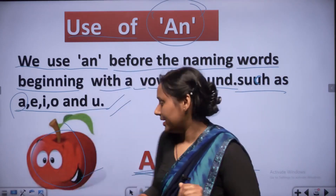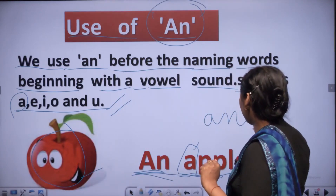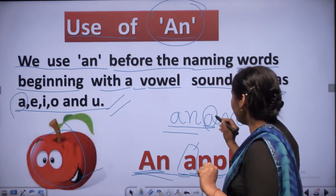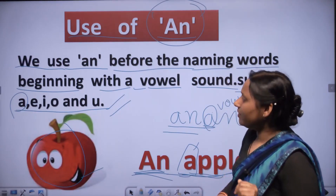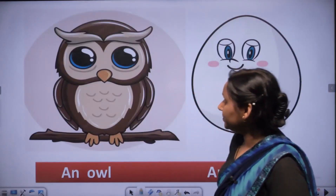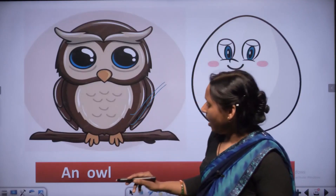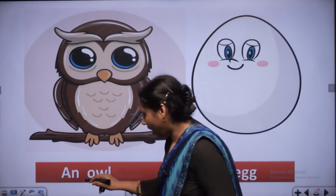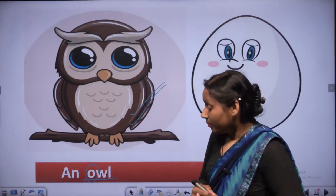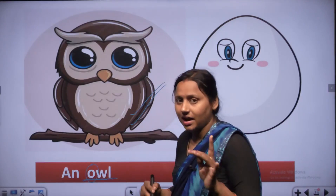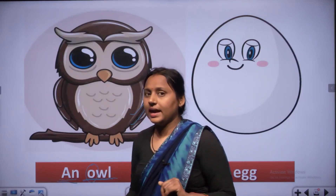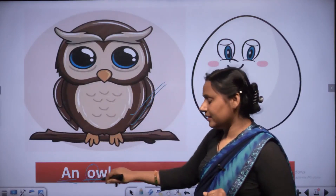Another example - think of A words. Ant - A, N, T - AN. A is a vowel sound, so we use AN. Then look at the picture - this is an owl. O, W, L - owl. First letter O is a vowel, so we use AN - an owl.